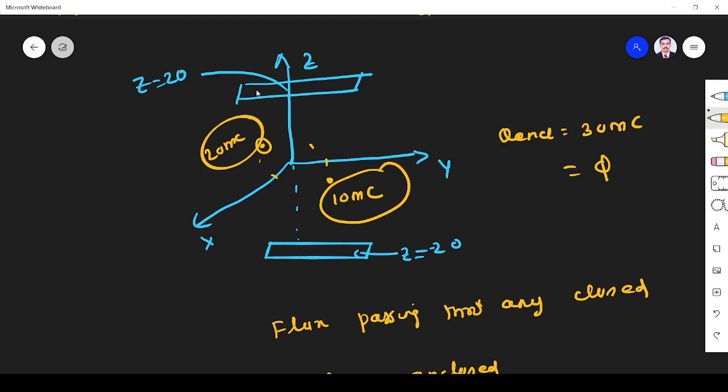But we have at plus 20 one plane and at minus 20 another plane. So equally they are divided. So 15 millicolum will pass via this and 15 millicolum pass via this.